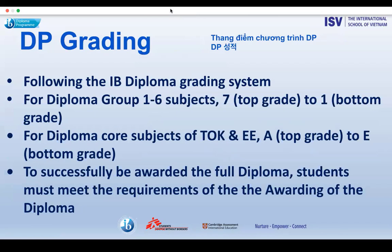We follow the IB grading system for Groups 1 to 6 subjects — 7 is the top grade and 1 is the bottom grade. For DP core subjects such as Theory of Knowledge and the Extended Essay, A is the top grade and E is the bottom grade. To successfully be awarded the full diploma, students must meet all the requirements, which can be found on the IB website.